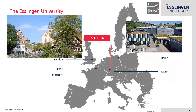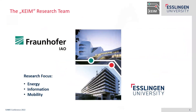Esslingen is a small city with a beautiful medieval-style city center, and on the right you see the main campus of the Esslingen University where around 6,000 students study engineering, IT, or social studies. Our research team, the KAIM, is a cooperation between the Fraunhofer research organization and the Esslingen University, and our research focus is energy, information, and mobility.